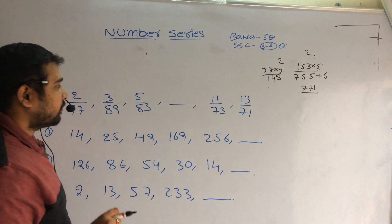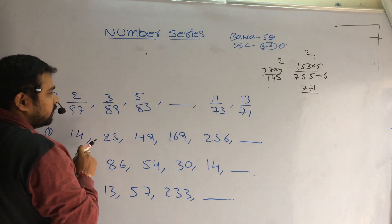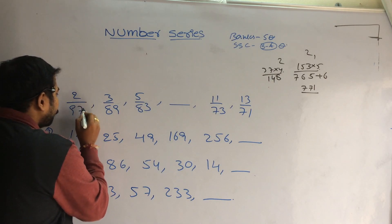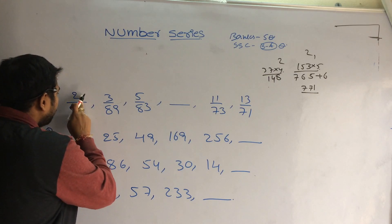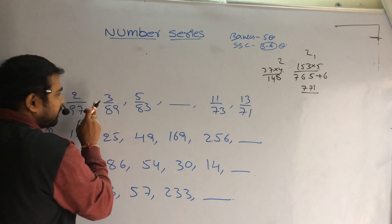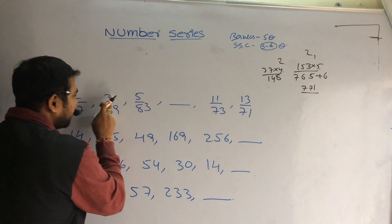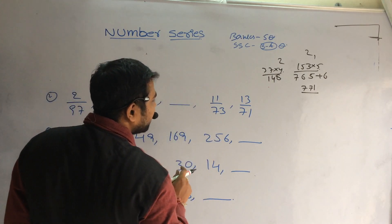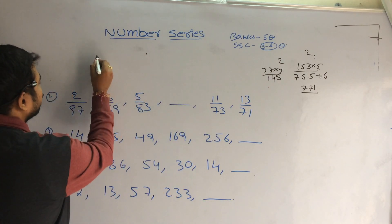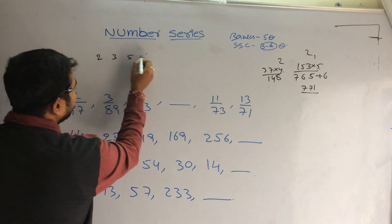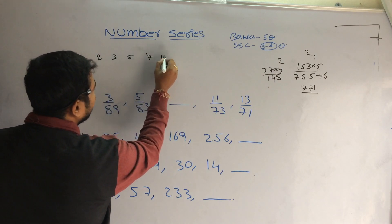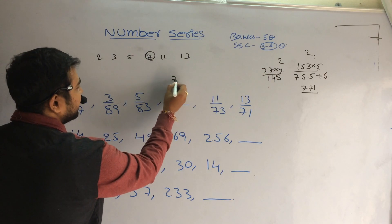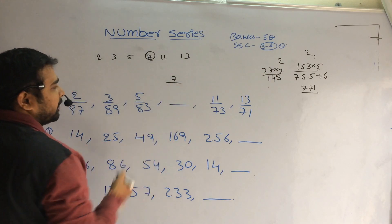Second one. Here, in this fraction, numerator and denominators. By observing these numbers, numerators are 2, 3, 5, 11, 30. These are prime numbers: 2, 3, 5, 7, 11, 30. So here, after 5, the next prime number is 7.